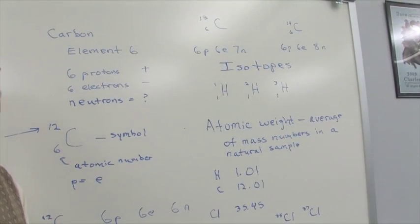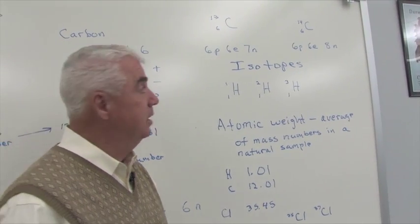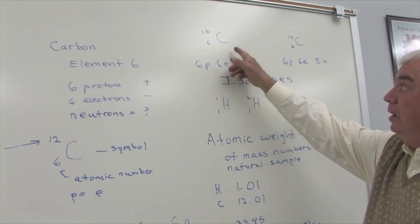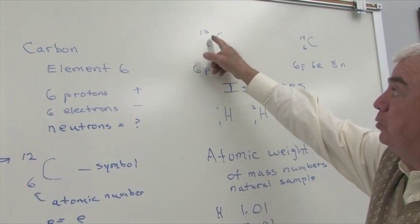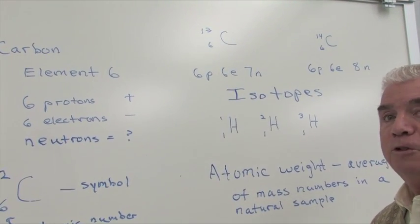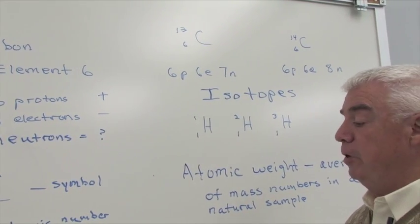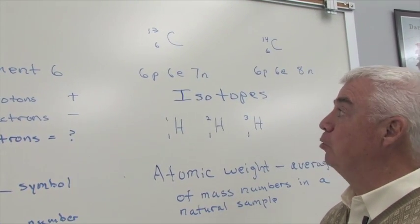It turns out that not all carbons have the same number of neutrons. For example, here are two more atoms of carbon. This one has a mass number of 13, this one has a mass number of 14. So they have different mass numbers, which means that these three examples of carbon have a different number of neutrons.